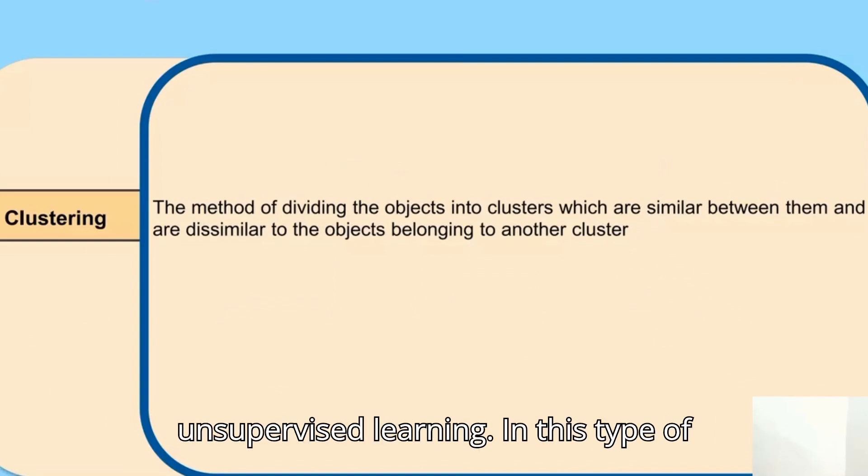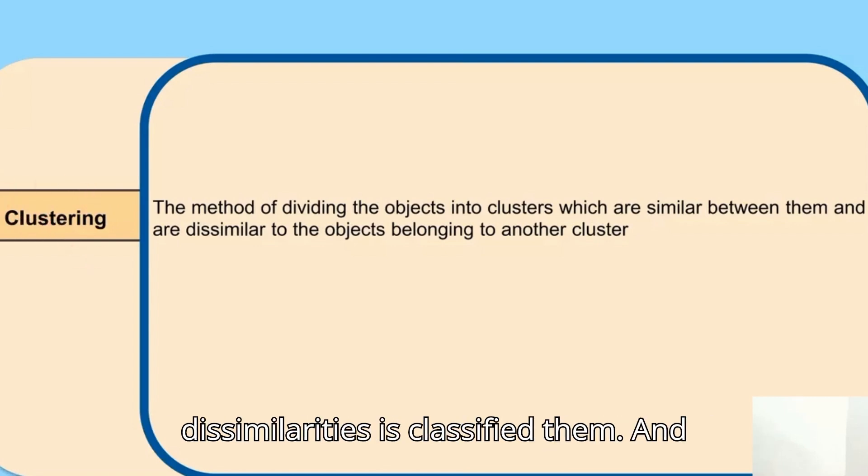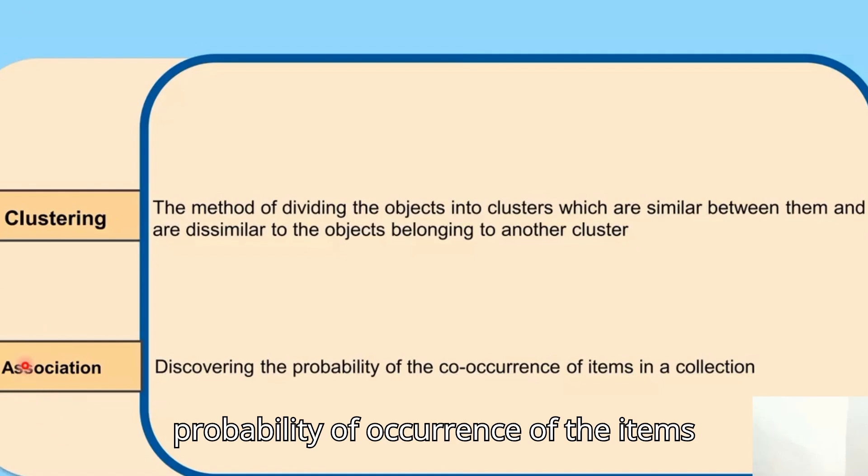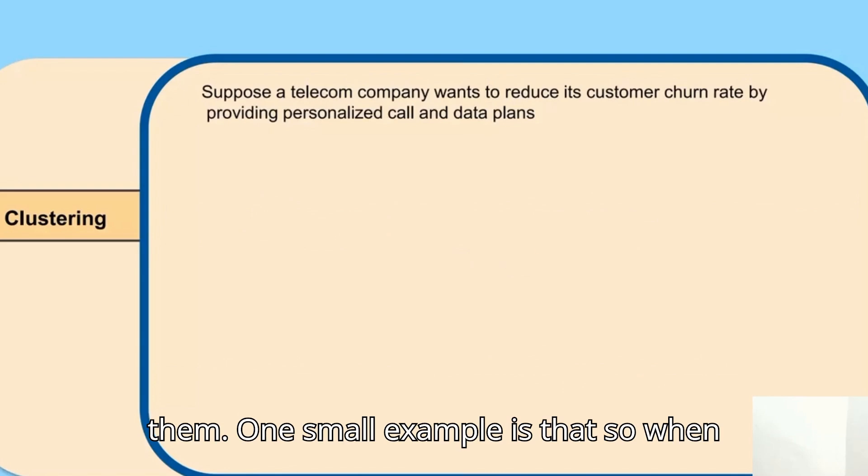Clustering is one main type of unsupervised learning. It divides objects into clusters based on similarities and dissimilarities. The second type in unsupervised is association rule. Here, based on the probability of occurrence of items present in the collection, it classifies them.